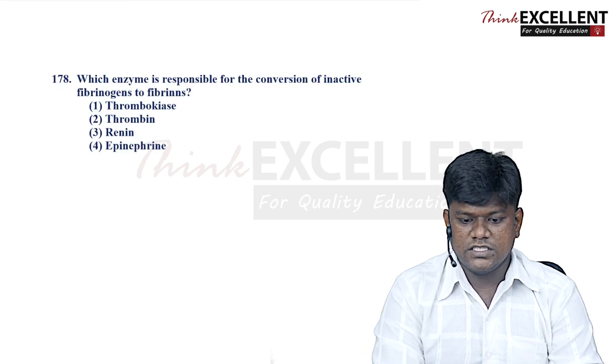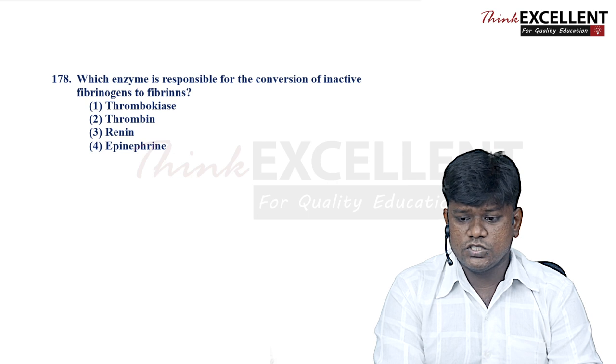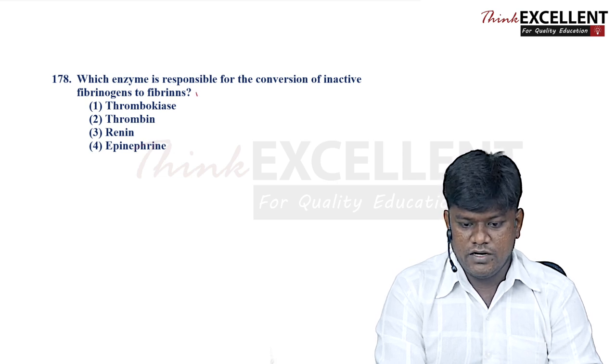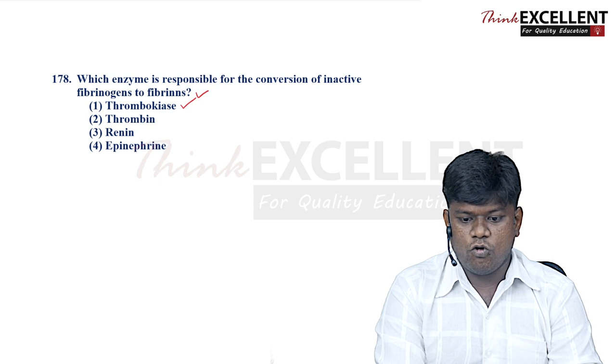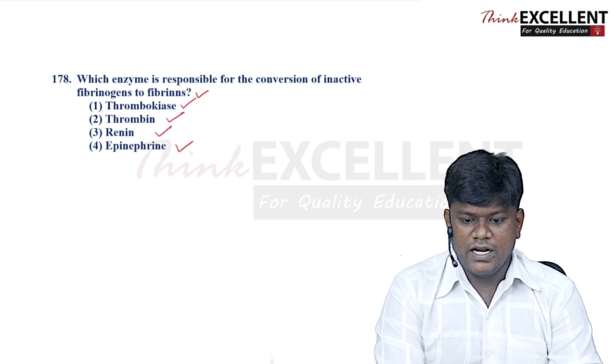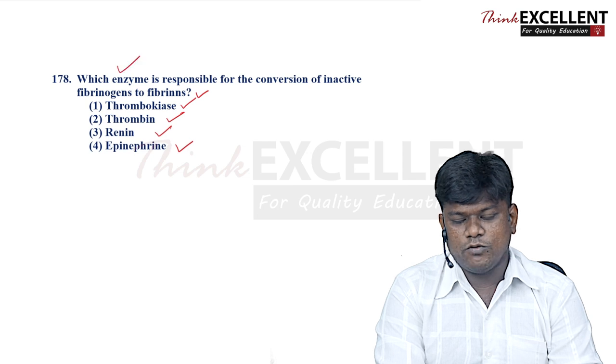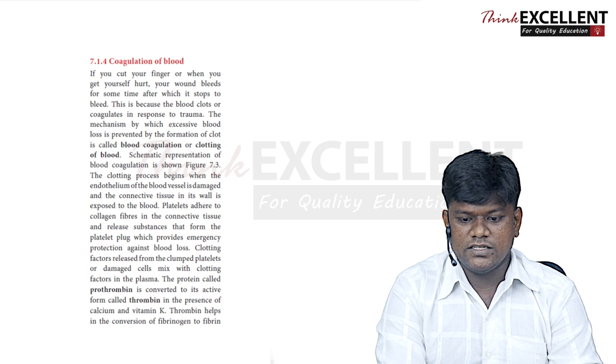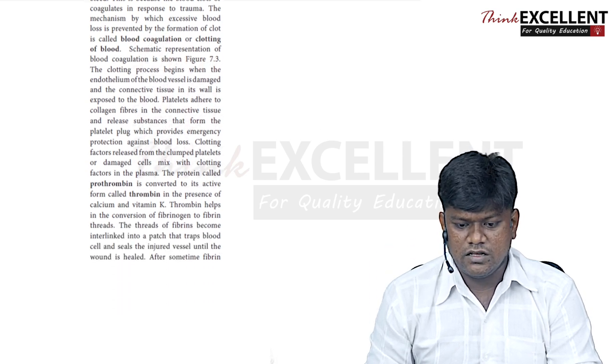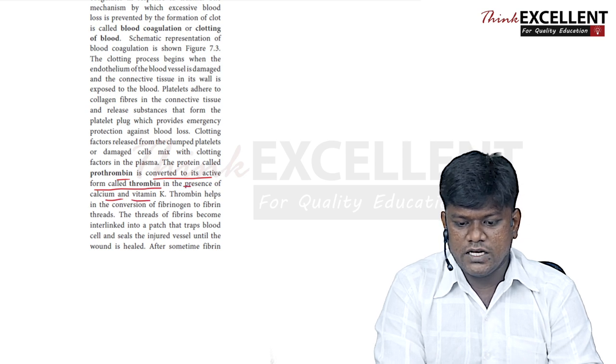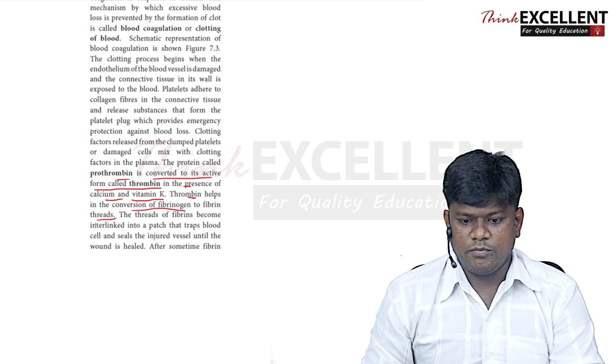Question 178: which enzyme is responsible for the conversion of inactive fibrinogen to fibrin? Options are thrombokinase, thrombin, renin, and epinephrine. Prothrombin is converted to active thrombin in the presence of calcium and vitamin K. Thrombin then helps convert fibrinogen into fibrin threads. So option 2 — thrombin — is the right answer.